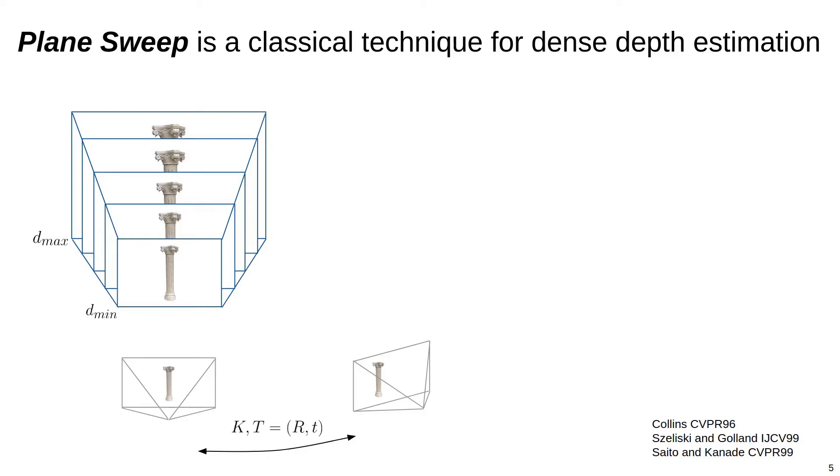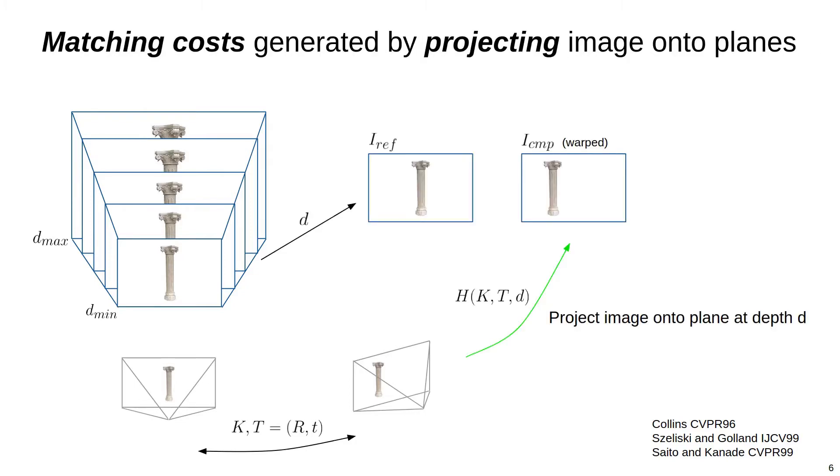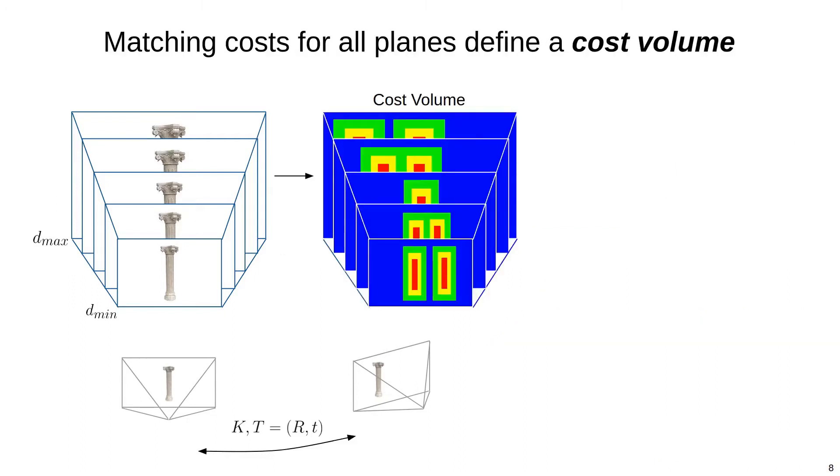The set of all planes across all the depth samples defines a 3D volume in the reference frame. Plane Sweep will fill in this volume with a matching cost for every pixel and every depth hypothesis before extracting a depth map that minimizes the costs. Matching costs are generated by projecting the comparison image onto the plane at depth d, and computing the difference with the reference image. After computing the matching costs for every depth slice, we end up with a 3D cost volume in the reference frame.